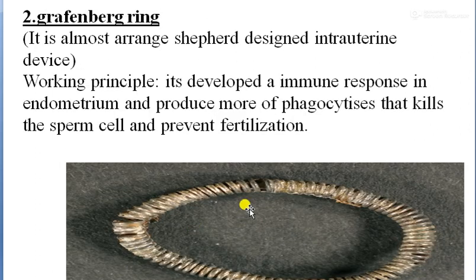Another example of non-medicated IUDs is the Grafenberg ring, which is an almost round shepherd-type intrauterine device. The working principle of non-medicated IUDs involves developing an immune response in the endometrium, producing more phagocytosis, which kills sperm cells and prevents fertilization.